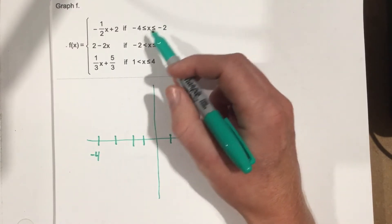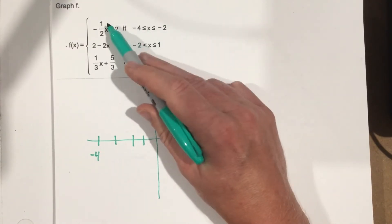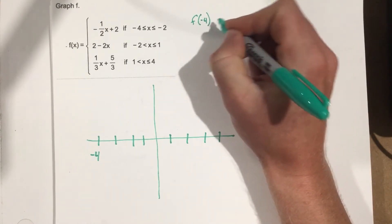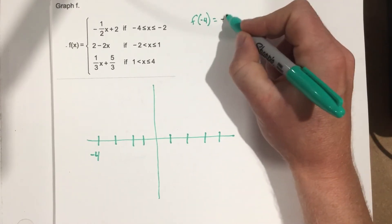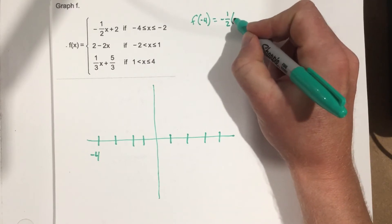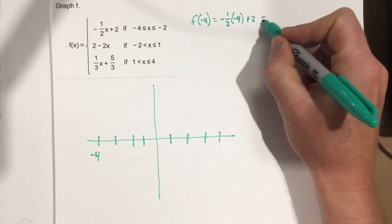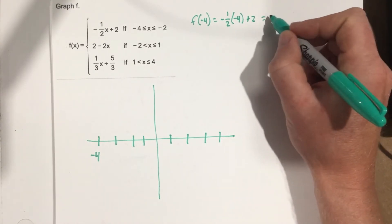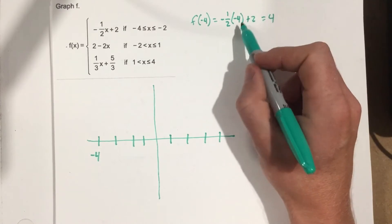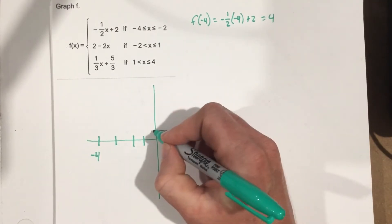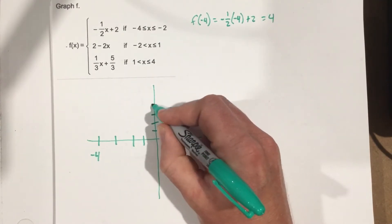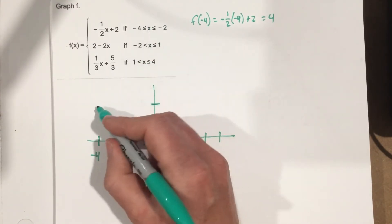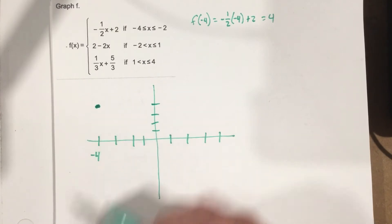All right, we want to plug in negative 4 and negative 2 into this function. So if I say f of negative 4, I get negative 1 half times negative 4 plus 2. Well, negative 1 half times negative 4, that's 2 plus 2 is 4. So my coordinate here would be negative 4, 4. So let's go to negative 4, 4. 1, 2, 3, 4. Negative 4, 4 is right here, and it's an equal sign, so it's a closed dot.